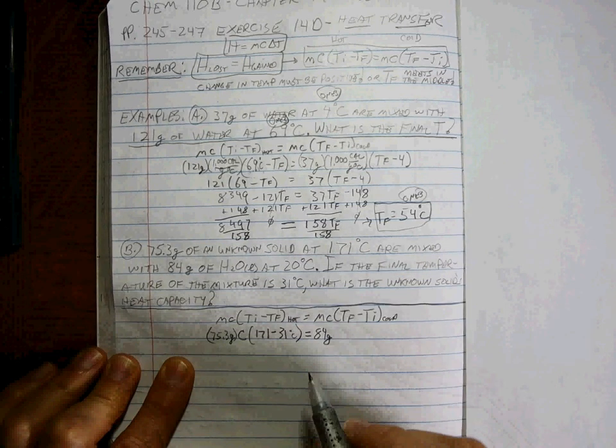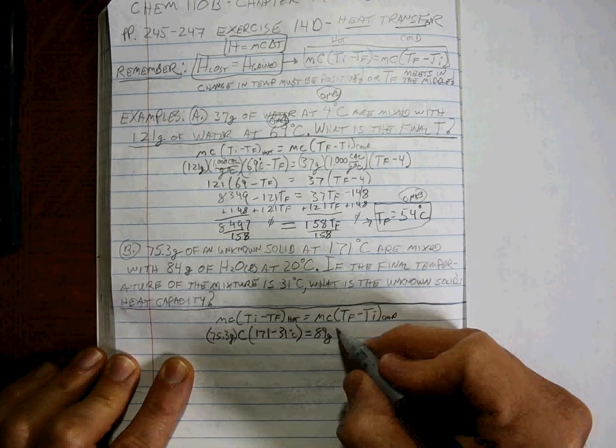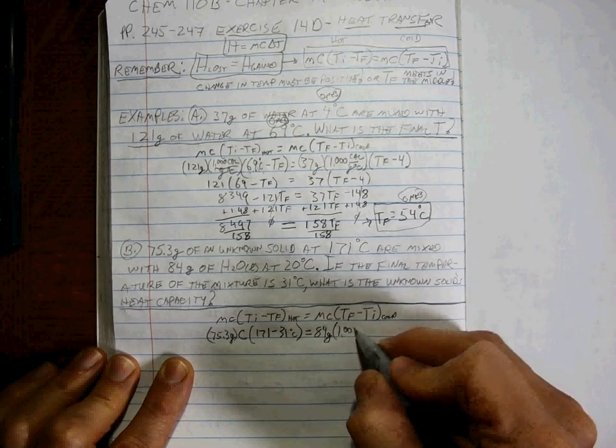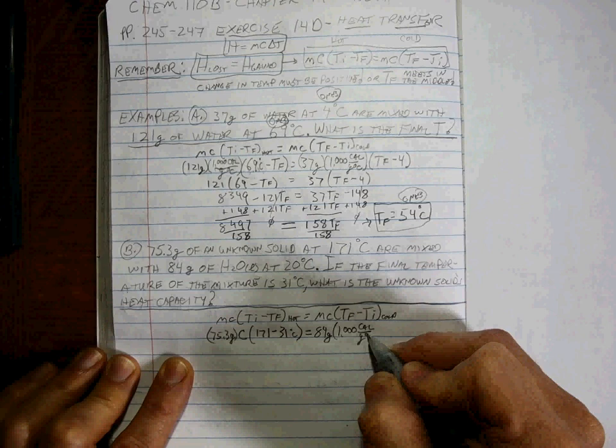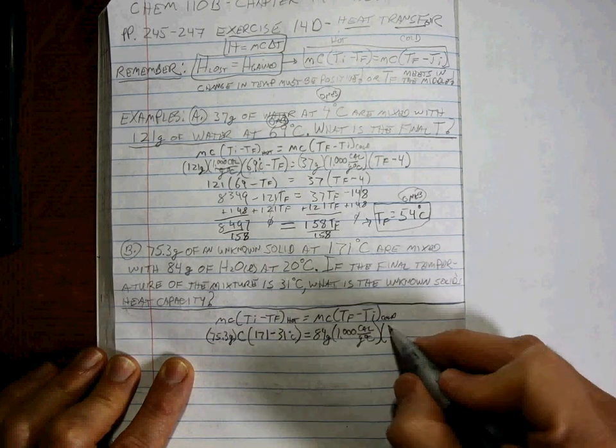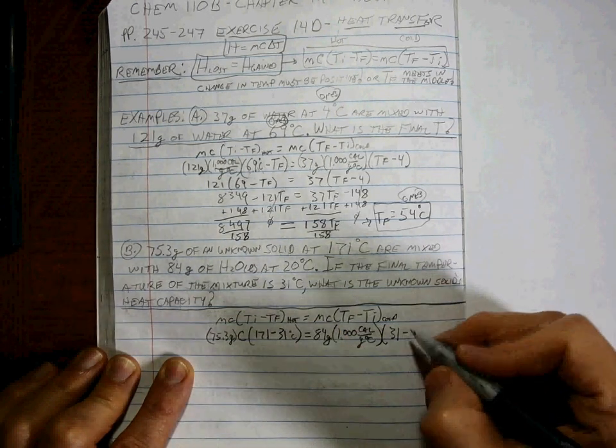And let's do this so that we can do the heat capacity in calories. We could do it in joules, I like multiplying by one. The final temperature was 31 and the initial temperature was 20.